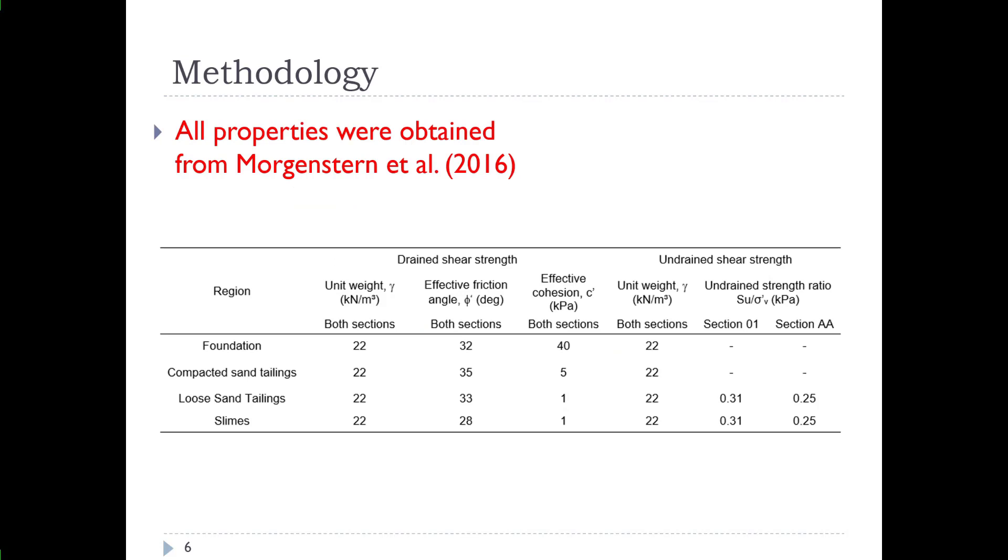For the methodology, as this is a subsequent follow-up study, the original expert panel report did not consider probability in the analysis. So this report is looking at the probabilistic analysis for a follow-up academic interest. The original materials and material properties used for the site were taken out of the expert panel report published in 2016. You can see the different region properties outlined here. Foundation is quite competent material and then there's a mixture of compacted sand tailings, loose sand tailings, and some slimes material.